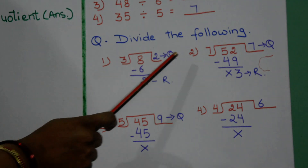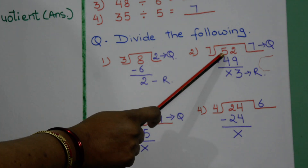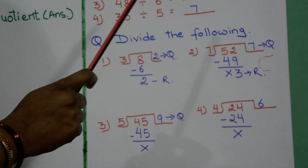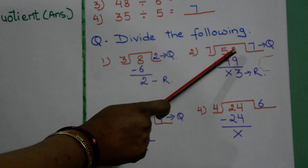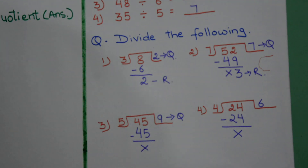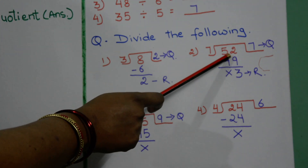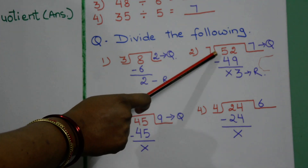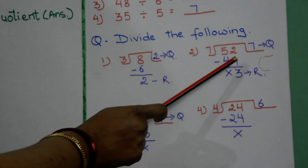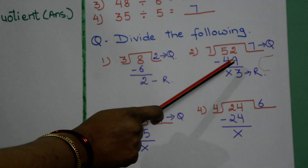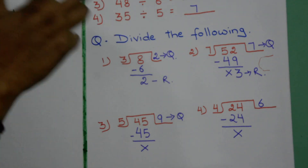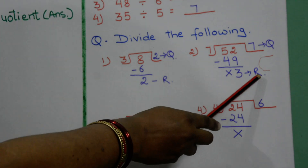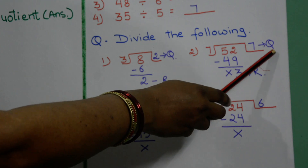Now the next question is 52 divided by 7. Whenever these types of questions come, read the table to the nearest value. Like: 7 sevens are 49, and 7 eights are 56 — but 56 is bigger than 52, so we take 7 sevens are 49. Minus them: 52 minus 49 is 3. So 3 is your remainder and 7 is your quotient.